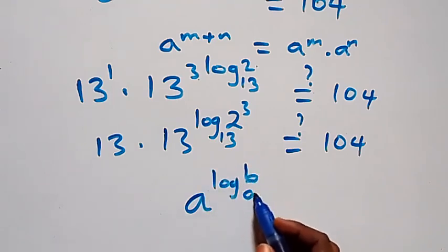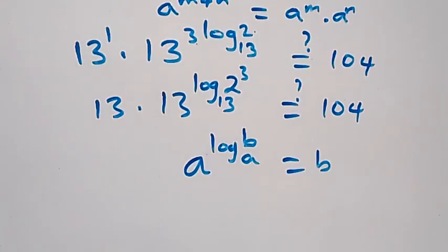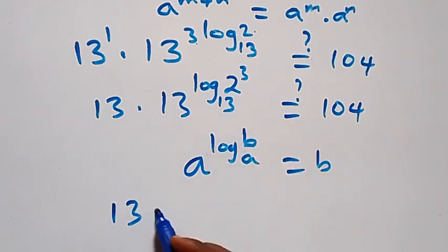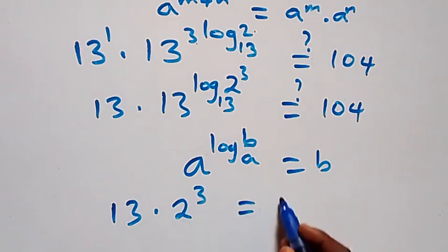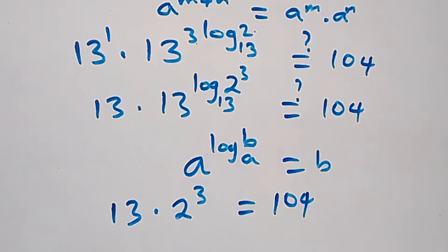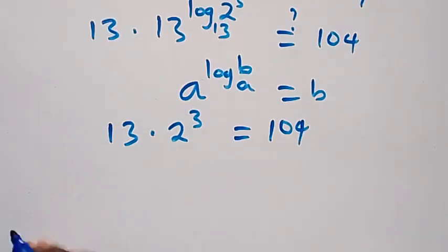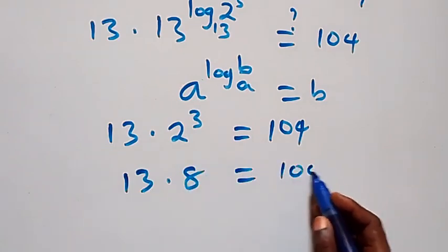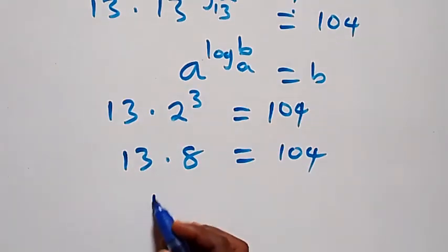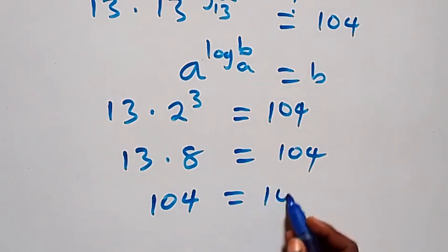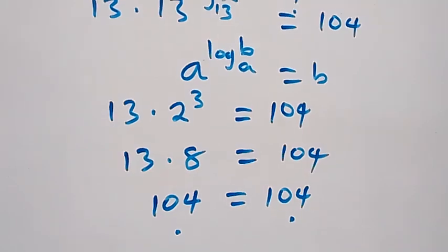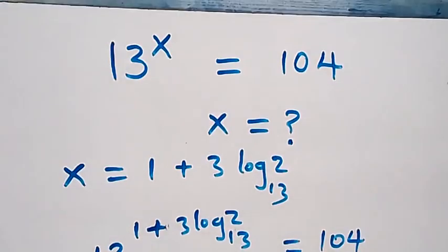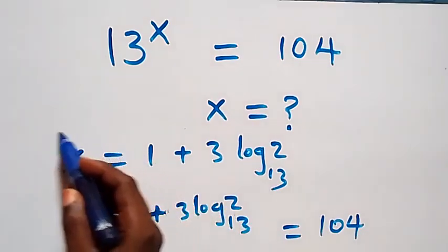Applying the logarithm identity — a raised to power log b to base a equals b — this becomes 2 raised to power 3. So we have 13 times 2 raised to power 3 equals 104. Since 2 raised to power 3 is 8, we get 13 times 8 equals 104, which is indeed 104. Left hand side equals right hand side, confirming x equals 1 plus 3 log 2 to base 13 satisfies this problem.